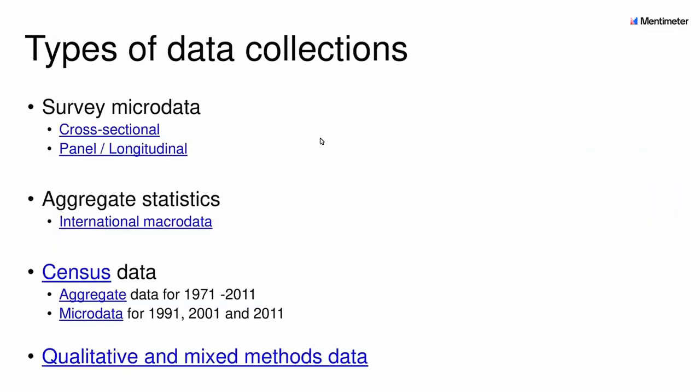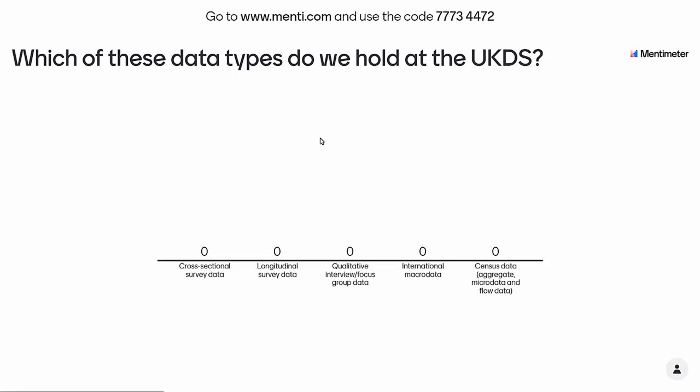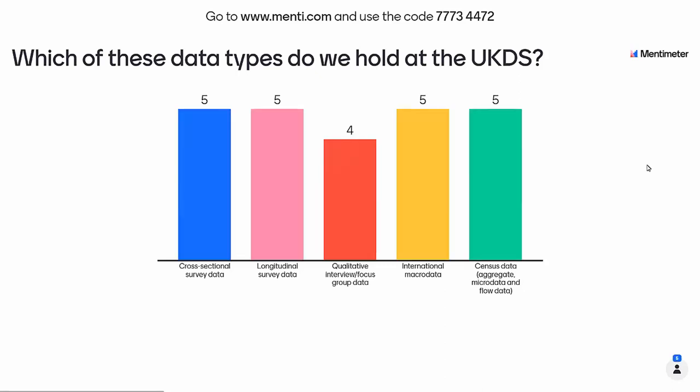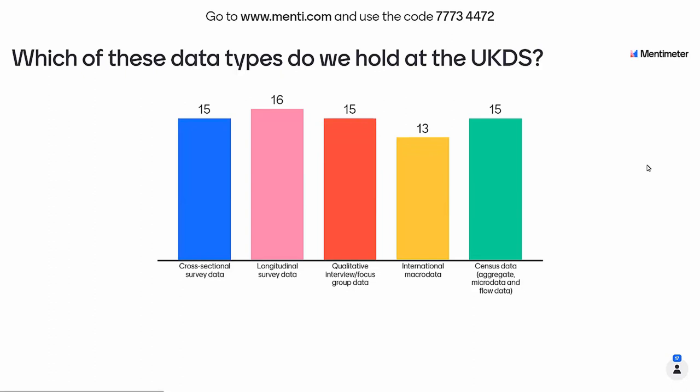What kind of data do we hold? The majority of our data, judging by the number of collections, is quantitative. We hold over 6,000 collections, of which 5,000 are quantitative — survey data both cross-sectional and longitudinal, aggregate statistics, domestic and international macro data, census data, and micro data. We also hold qualitative and mixed method data as well. So quite a wide range — we do hold all of these types of data.